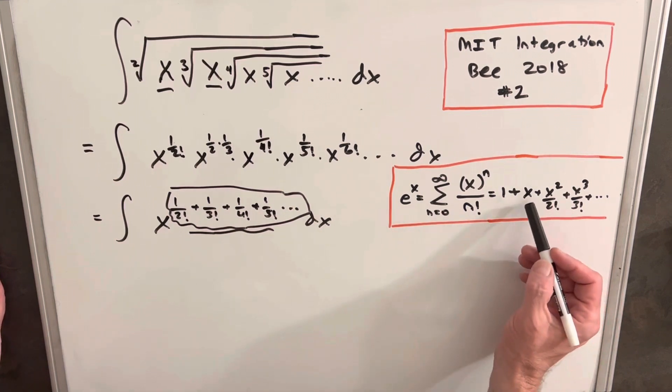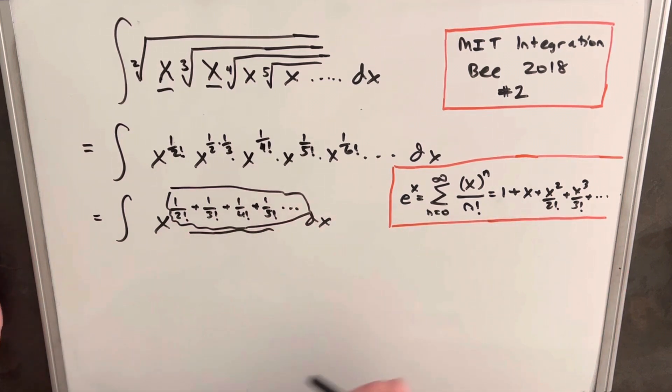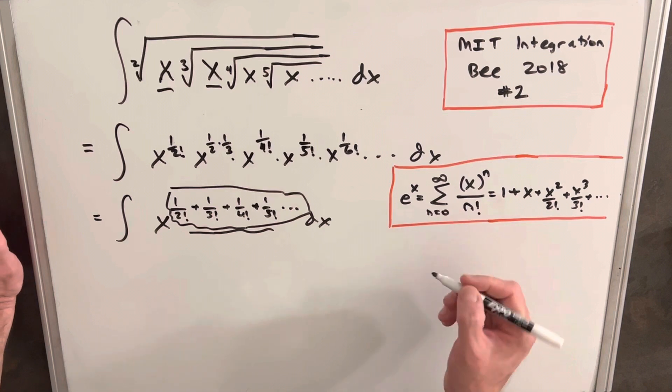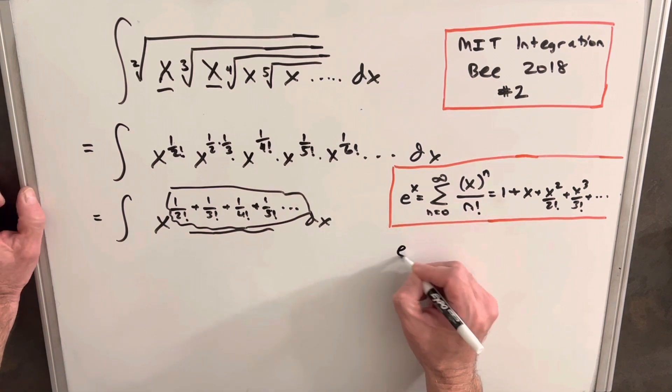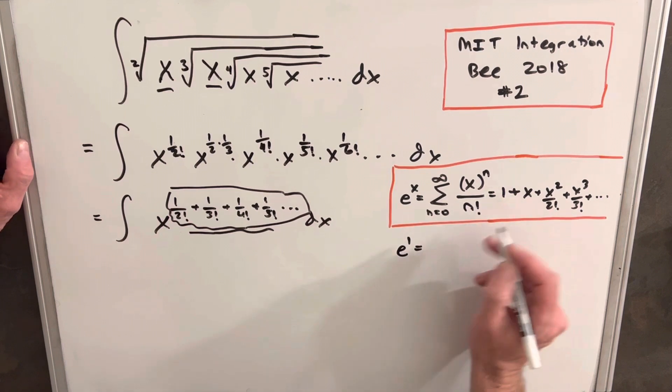But the problem, we have all these x's in this that we don't have over here. But that's pretty easy to fix because what we can do is just evaluate e to the x at e to the 1, or just e.